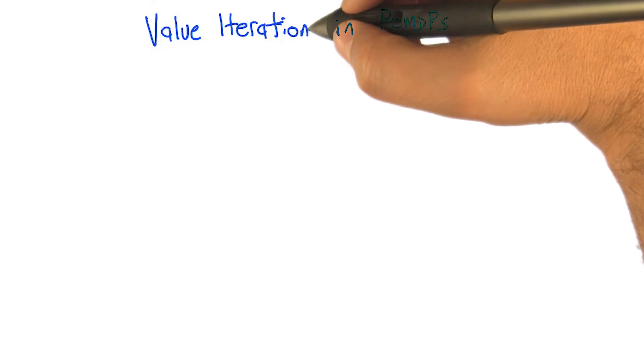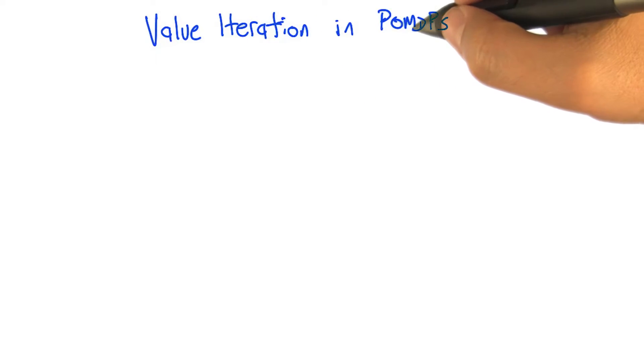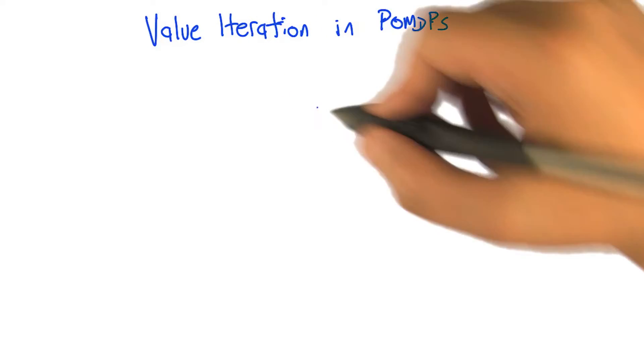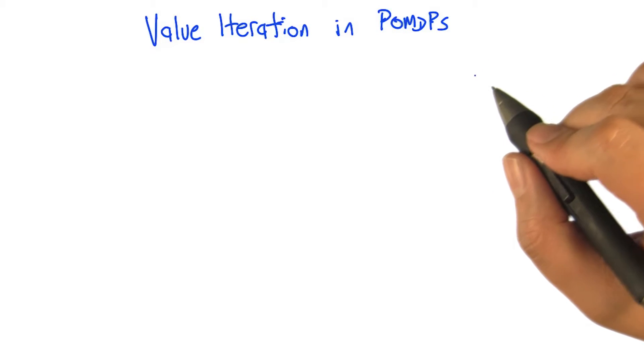So what we're going to do now is actually step through what value iteration would look like in POMDPs, and then piece by piece we're going to convert that to something that actually can be computed.